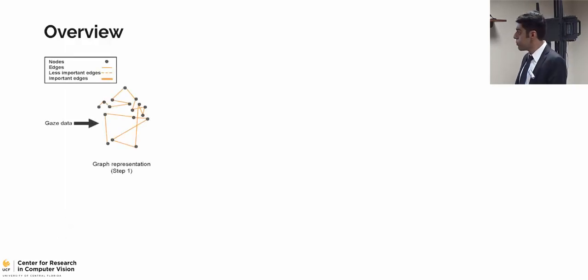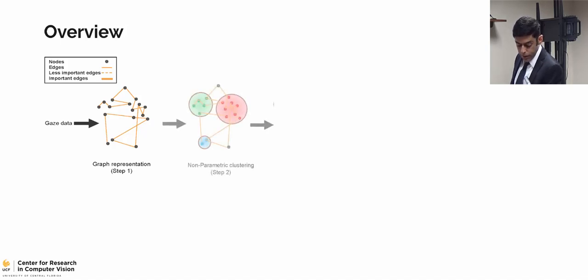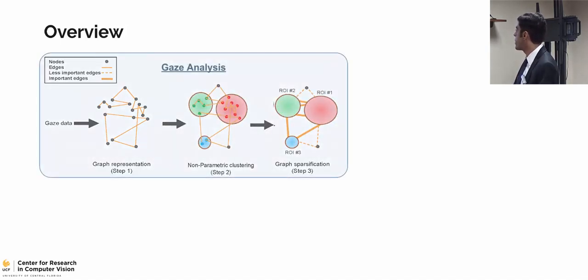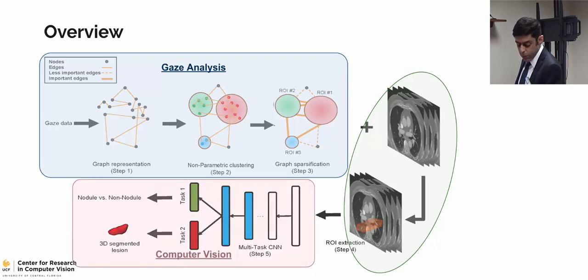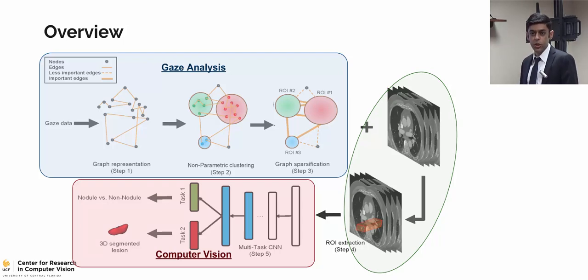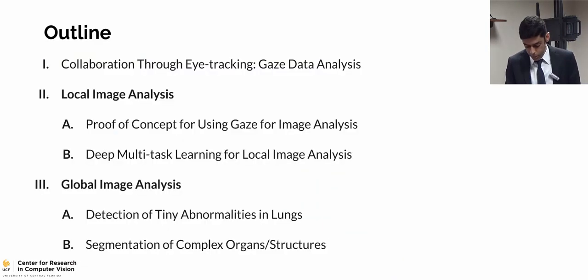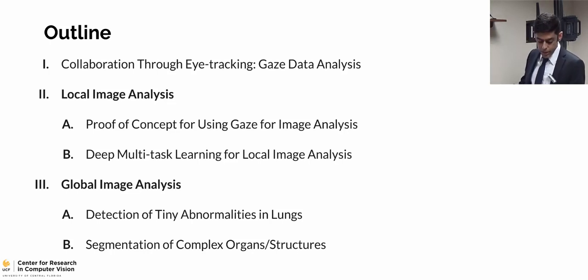As an overview, we first model our gaze data into a graph. After clustering and some graph analysis, we extract the regions of interest — this is the gaze analysis portion. Then we combine this with imaging modalities to get information from the CT scans, and propose a set of computer vision solutions for image analysis, targeting both the regions that radiologists are struggling to make a decision on and the regions they're missing to explore entirely. The image analysis modules are divided into local image analysis and global image analysis.